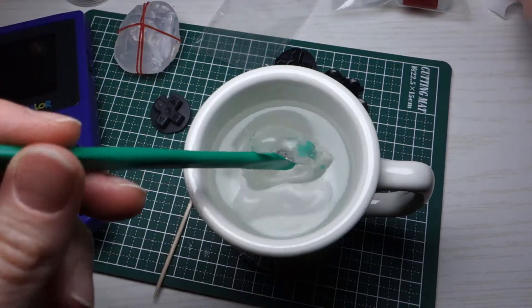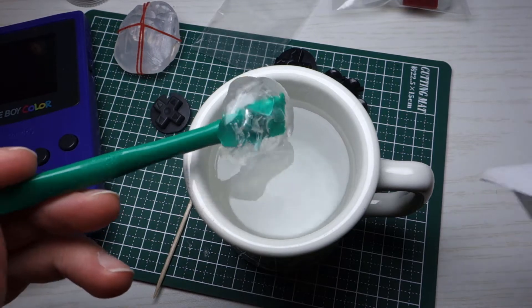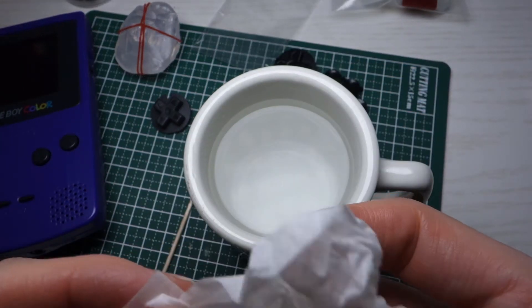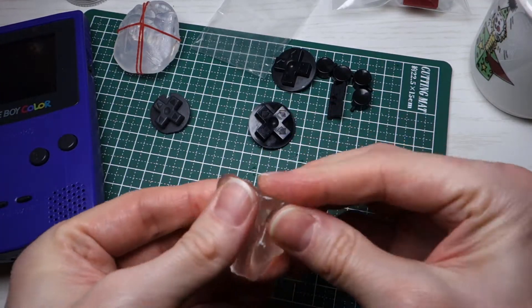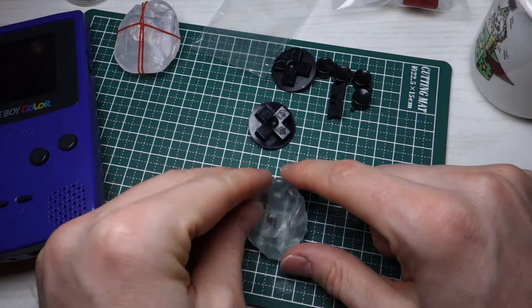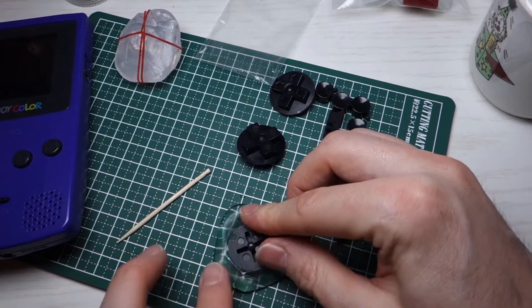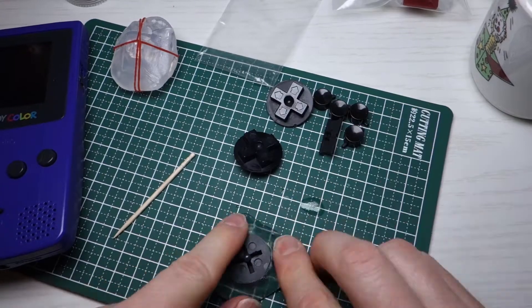As in my previous video, I showed you how to use Oyumaru. We got the hot water here and we put it in for two to three minutes and now it's nice and pliable. Put it up into a ball and then smash our d-pad down into it. We don't want to push it too deep. We want to just make sure all the details come out on the bottom.